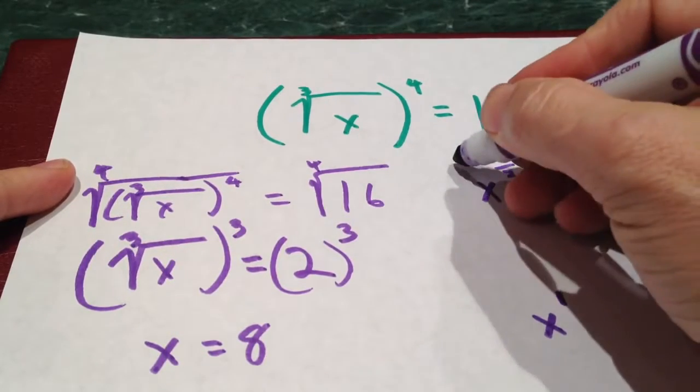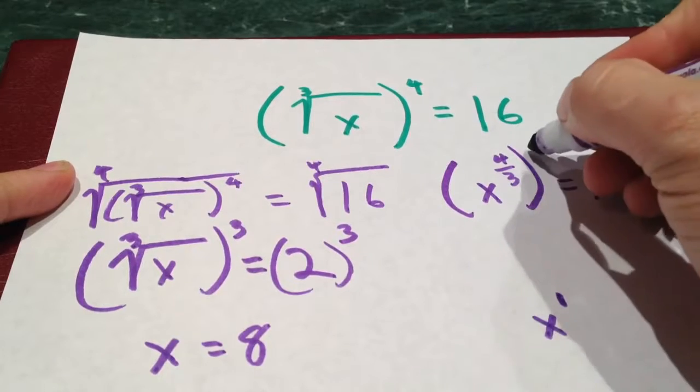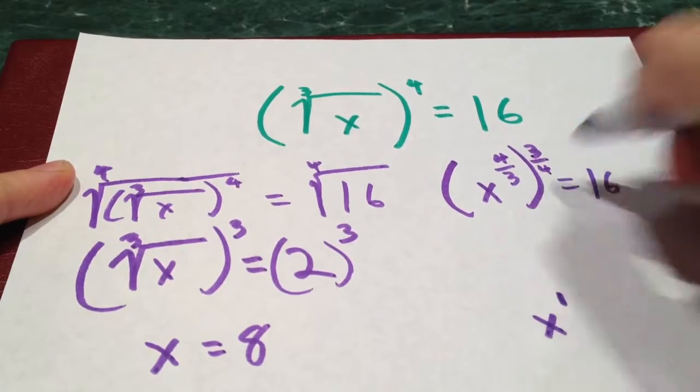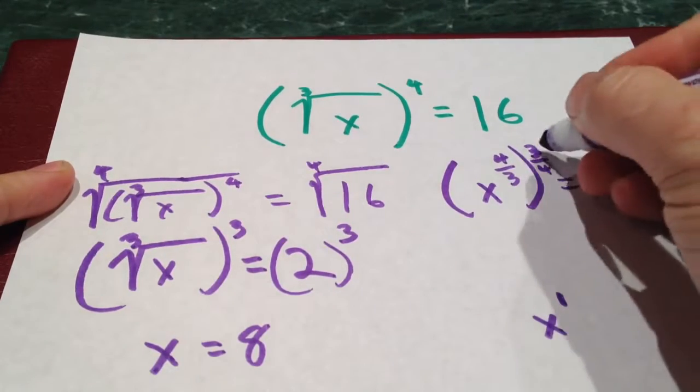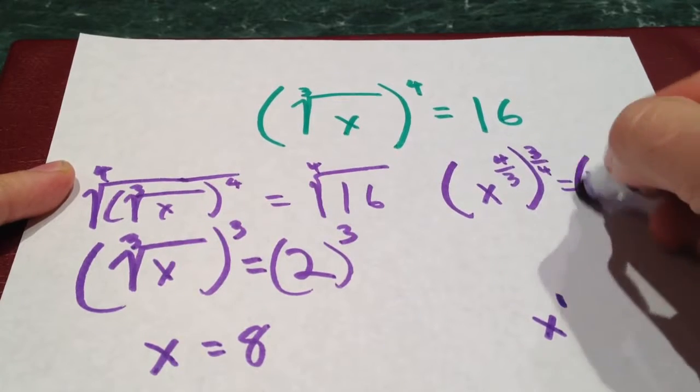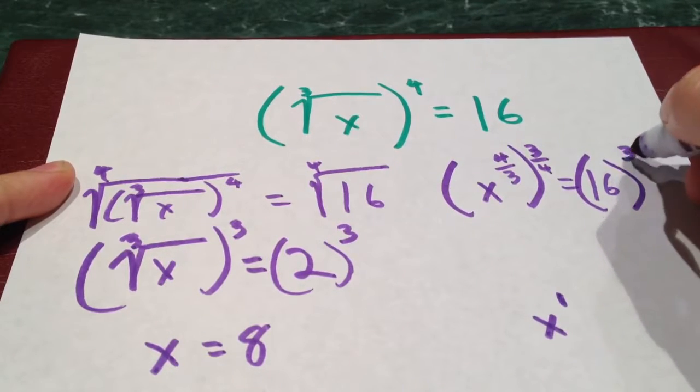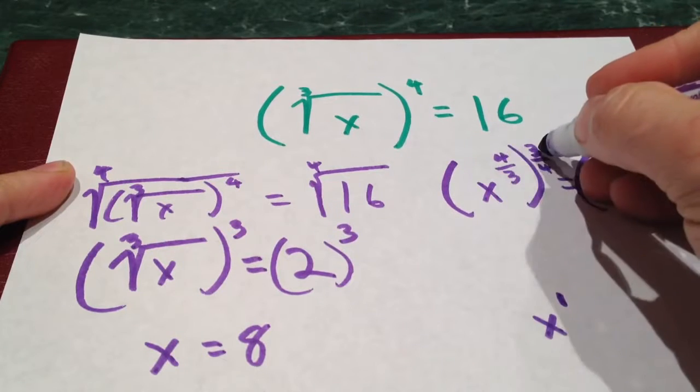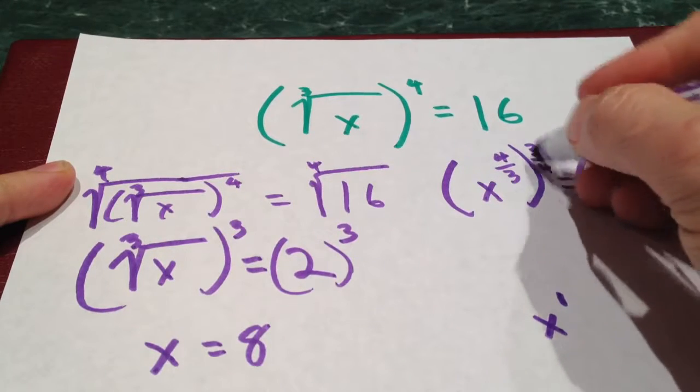What I'm really doing is I'm raising this thing to the 3 fourths power, because I'm going to multiply across power to power rule. So I do the same thing to the other side to keep my equations balanced. 4 times 3 is 12, 3 times 4 is 12, 12 over 12 is 1.